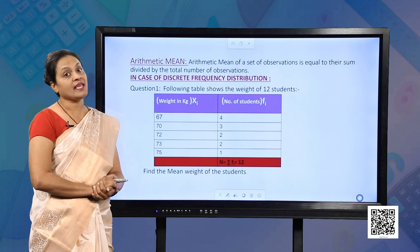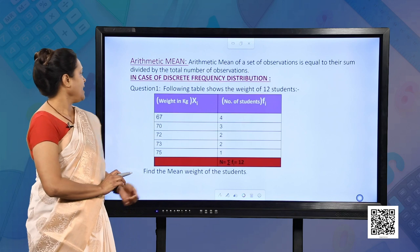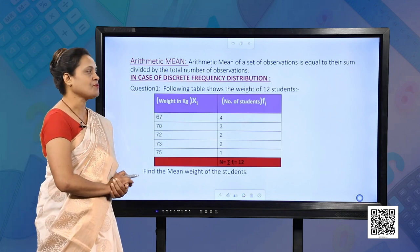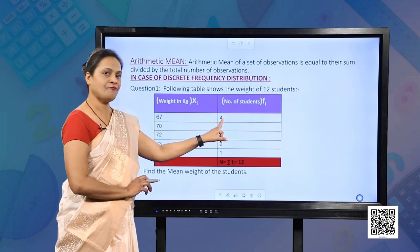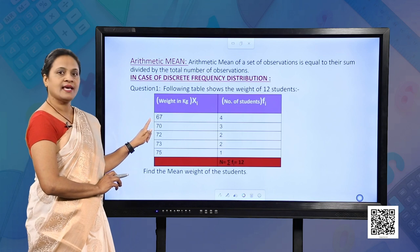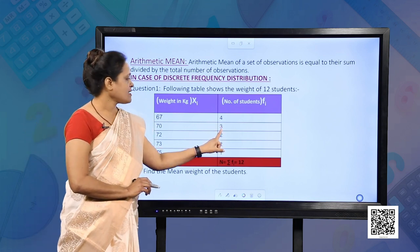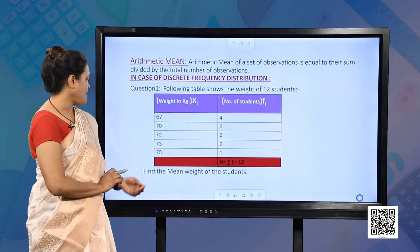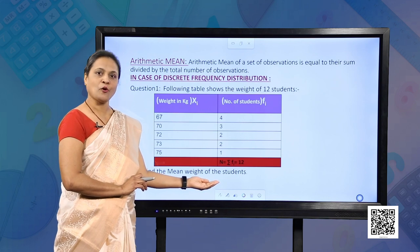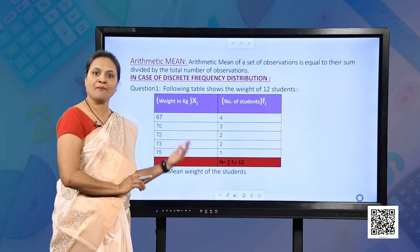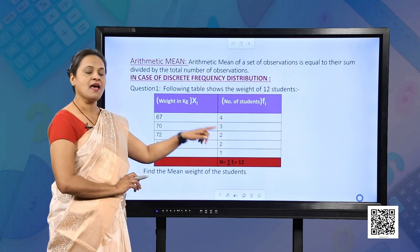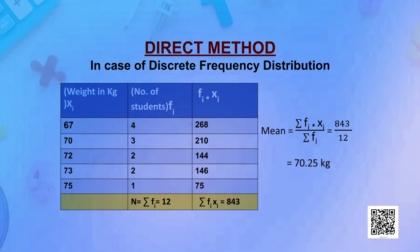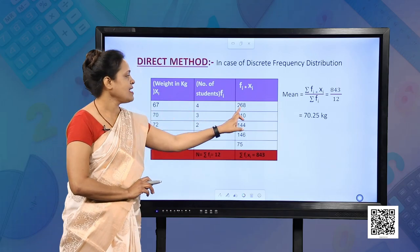Now let us learn how to find out the mean for a discrete frequency distribution. We take an example where the weights of twelve students are given. The table says each of these four students has weight 67 kg and each of these three students has weight 70 kg, and we are asked to find the mean weight. Using the marble analogy, if these four students are given marbles equal to their weight, the total marbles collected by these four students will be 67 × 4 = 268.